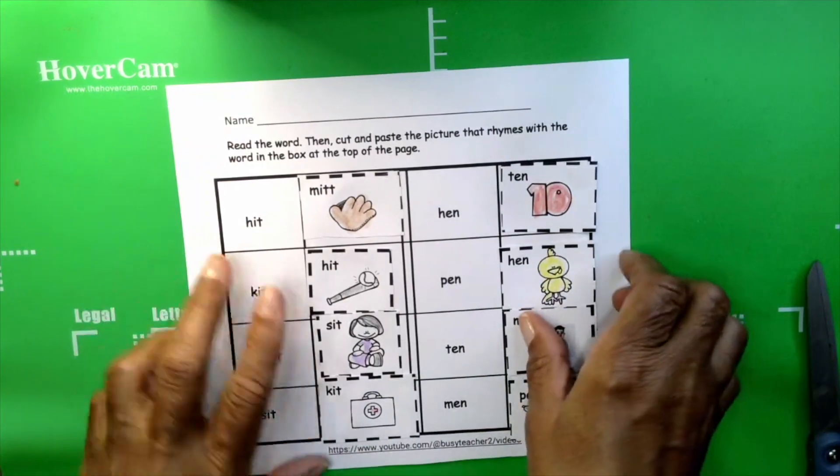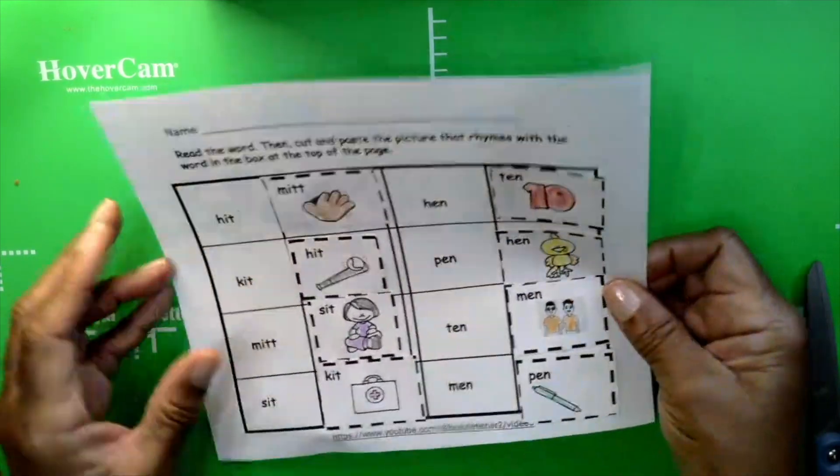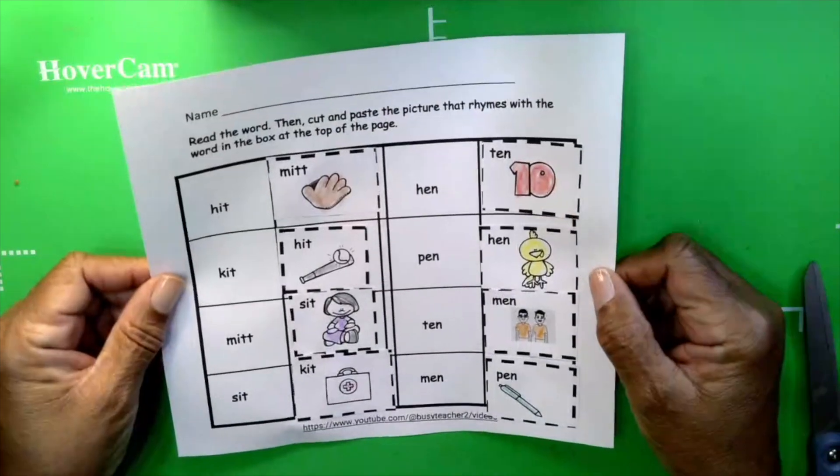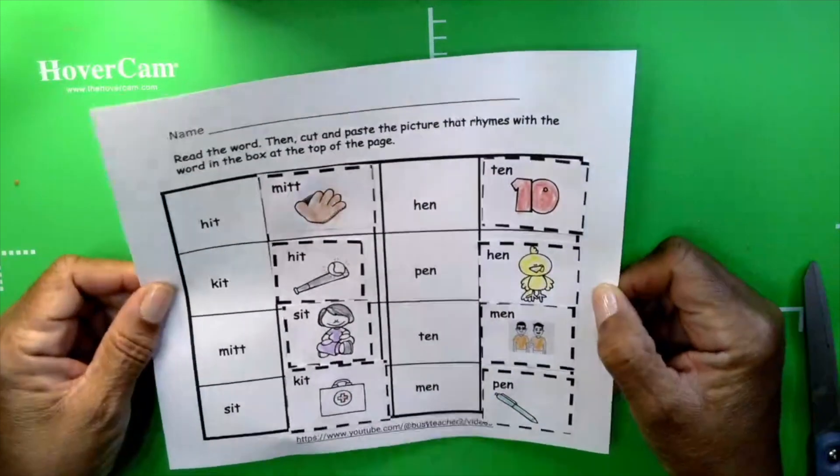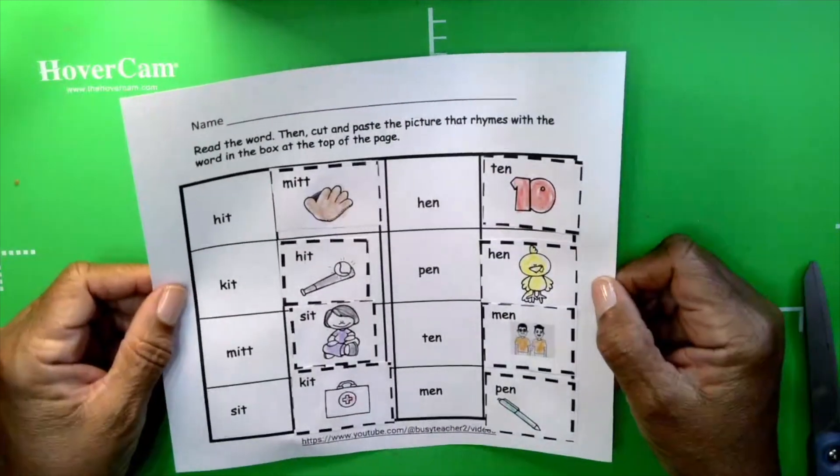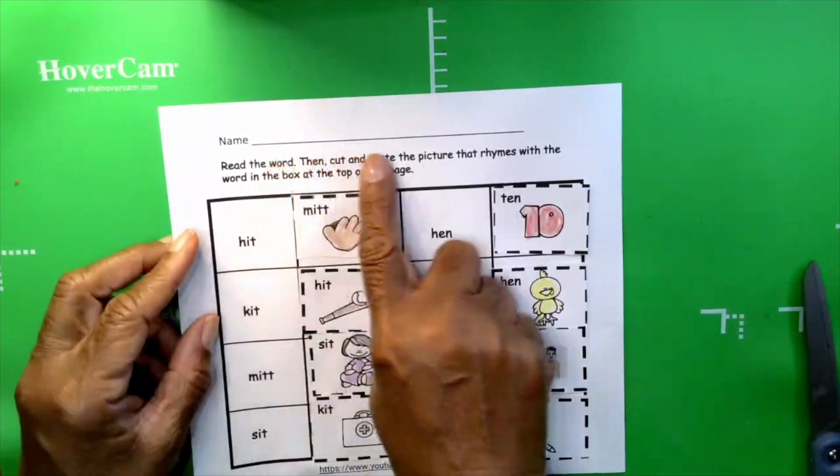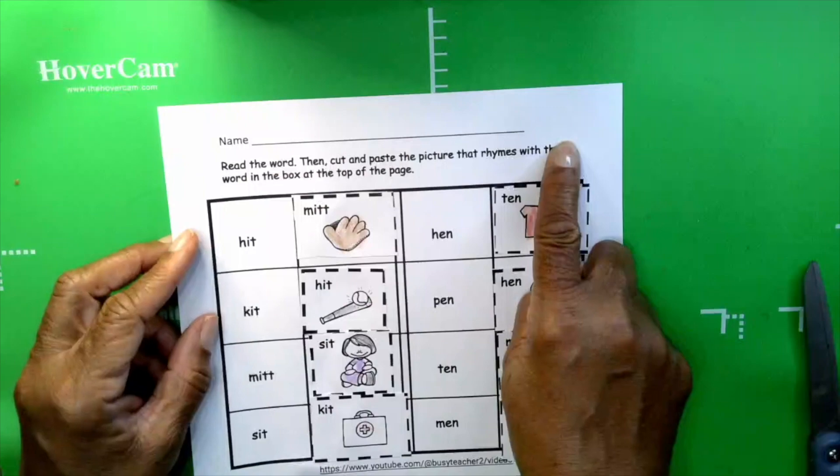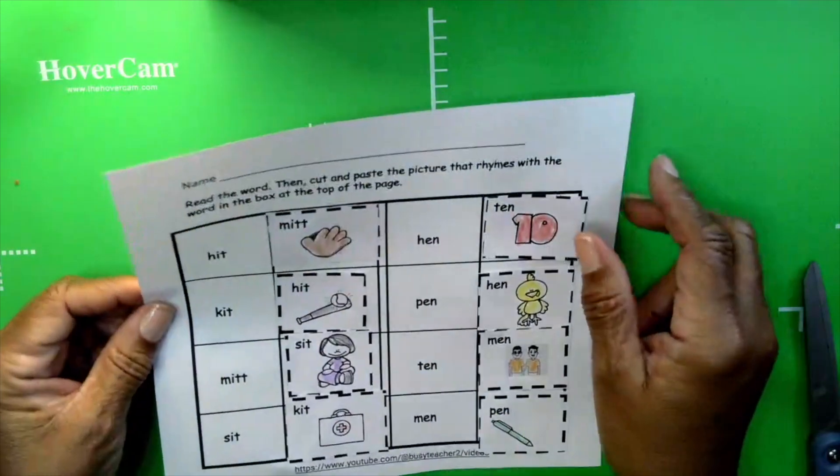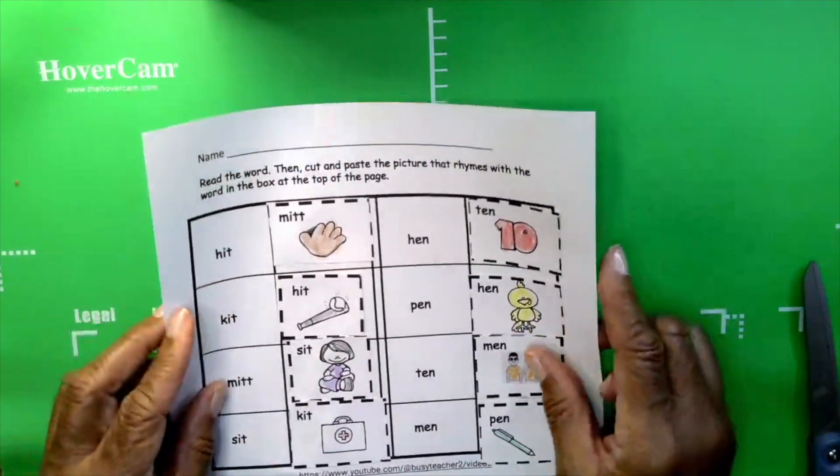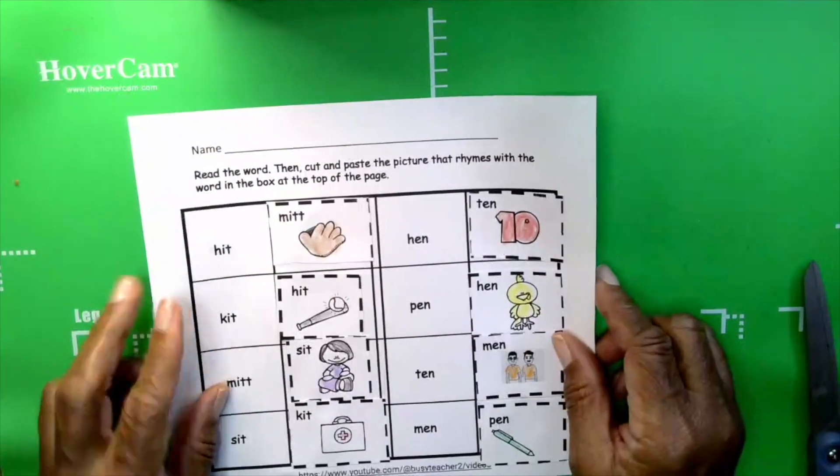Okay, boys and girls, we did it. Very good. I know you did a great job coloring because you did such a good job matching the rhymes. Don't forget to write your name at the top. Parents and teachers, don't forget to subscribe to our channel. And we'll see you next time.